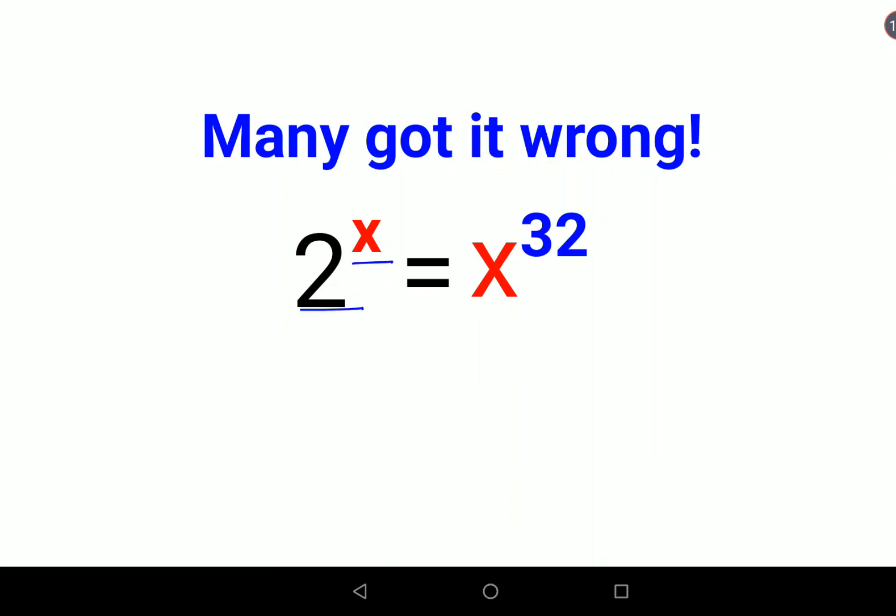We have 2 raised to x equals x raised to 32. When you have something like this, what you should be doing first is... we will take, or rather, let me do it the other way around.